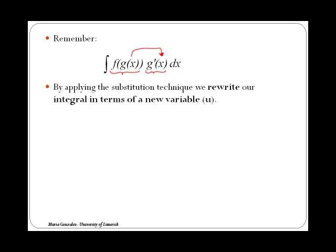By applying the substitution technique, what we do is rewrite our integrals in terms of a new variable that we will call u. In substitution, we will call u to the inside function. So in the integral above, u will be g. After applying the substitution technique, the new integral that you will obtain can be solved by direct integration, which means that you will be able to use the formulas in your log tables.